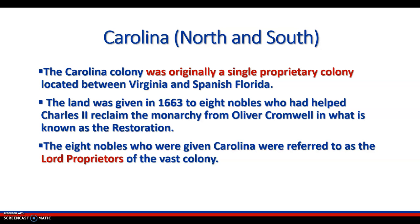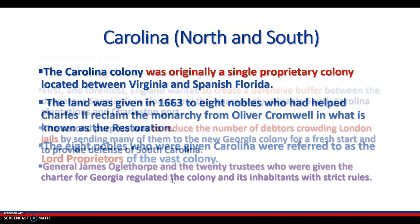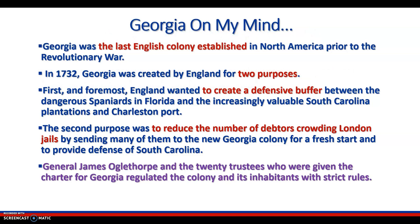The Carolinas — North and South. The Carolina colony was originally a single proprietary colony located between Virginia and Spanish Florida. The land was given in 1663 to eight nobles who helped Charles II reclaim the monarchy from Oliver Cromwell in what is known as the Restoration. The eight nobles were referred to as the lord proprietors of the vast colony. Georgia was the last English colony to be established in North America prior to the Revolutionary War. In 1732, Georgia was created for two purposes: to act as a defensive buffer and to house a large number of debtors crowding London jails. General James Oglethorpe and the twenty trustees regulated the colony with very strict rules — no alcohol and no slaves.